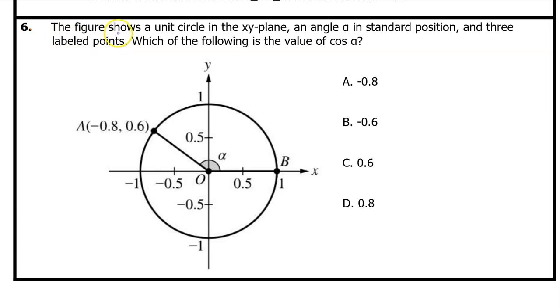Number 6. The figure shows a unit circle in the xy plane, an angle α in standard position, and three labeled points. Which of the following is the value of cos α? Hopefully at this point you have memorized the formulas for sine, cosine, and tangent. However, we are talking about a unit circle, and on the unit circle the radius is 1. So let's replace these r's with the number 1. However, y over 1 is just y, and x over 1 is just x.